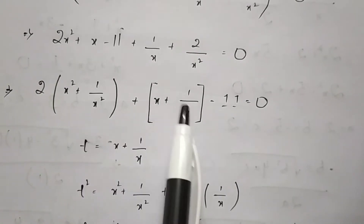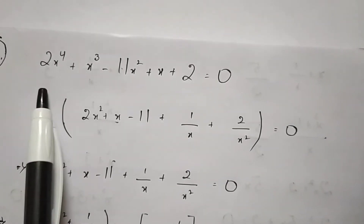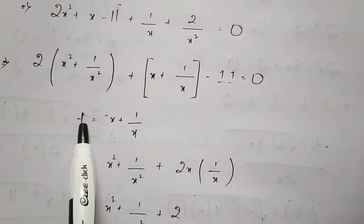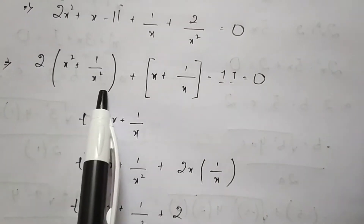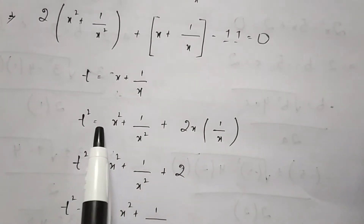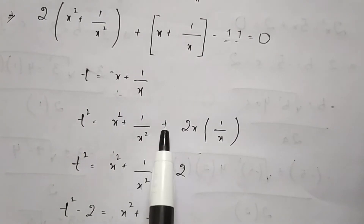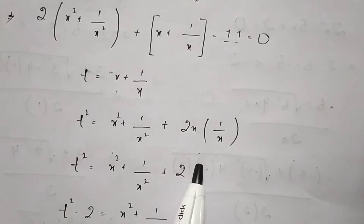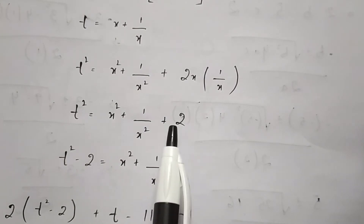We need to convert this equation into a quadratic equation. Therefore, we take x + 1/x as t. This term will become t. To get x² + 1/x², we do squaring on both sides. On squaring, (x + 1/x)² = x² + 1/x² + 2·x·(1/x). Here x cancels, so t² = x² + 1/x² + 2.